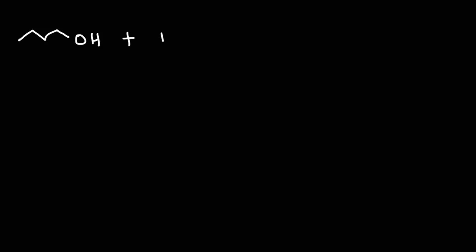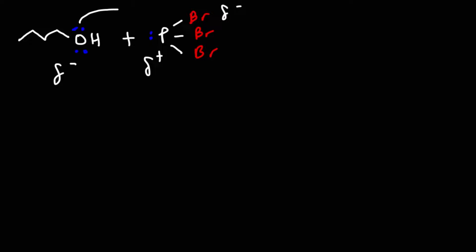Let's draw 1-butanol reacting with PBr₃. Phosphorus tribromide has a lone pair on phosphorus. Bromine is more electronegative than phosphorus, so bromine is partially negative and phosphorus is partially positive. The oxygen in the alcohol has a partial negative charge and is attracted to the partially positive phosphorus. Oxygen behaves as a nucleophile, attacking phosphorus and expelling one of the bromine atoms, giving an intermediate where the oxygen is now bonded to the phosphorus species.